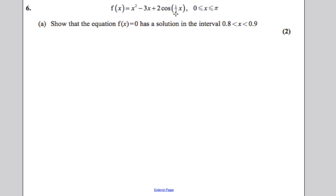Firstly, there is a trigonometric part to this function, so you must be in radians. If this here didn't give you a hint enough between 0 and pi, your calculator must be in radians mode. So the first thing you work out is f of 0.8 and then you work out f of 0.9 with your calculator in radians mode.